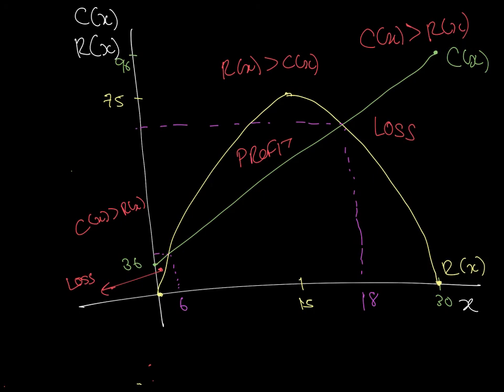That's basically it for assessing the revenue, cost, and profit model — the one type of model we looked at. Tomorrow I will continue with example 2 and exponential growth and decay. Enjoy the rest of your day, bye.